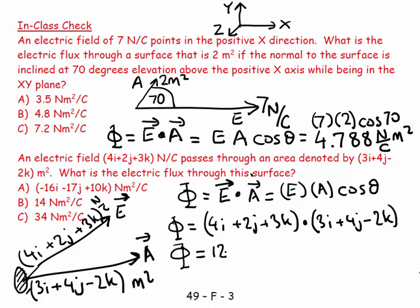We do the scalar product by multiplying coefficients together. 4 times 3 is 12, then 2 times 4 is 8, then 3 times -2 is -6. So 12 + 8 - 6 equals 14.